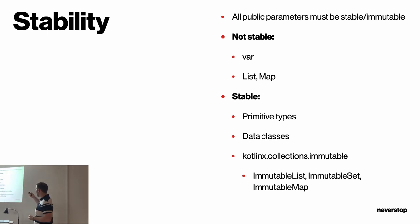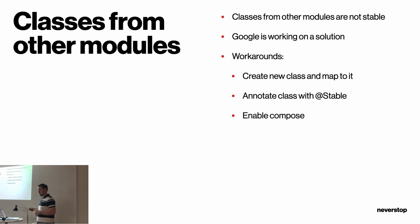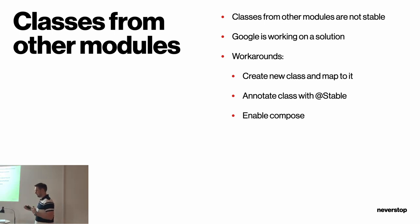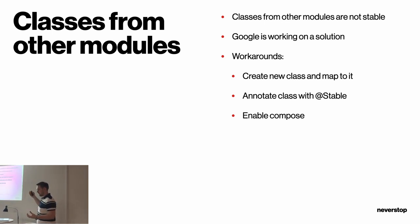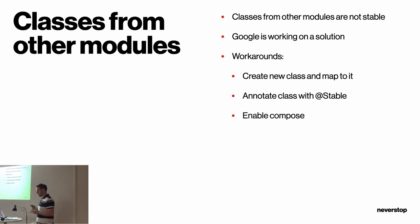All parameters attached to composable functions need to have all public parameters stable and immutable. Not stable are var, List, and Map, because there is no guarantee they are immutable. Instead, use primitive types, data classes, or classes where all public parameters are stable. And instead of plain List and Map, use immutable collections from KotlinX — which has ImmutableList, ImmutableSet, ImmutableMap. There is an ongoing issue: classes from other modules are not stable because the compiler cannot figure out if they are stable. You have three workarounds: create a new class in your UI module with a mapper, annotate the class with @Stable, or enable the Compose compiler configuration in your build.gradle file.